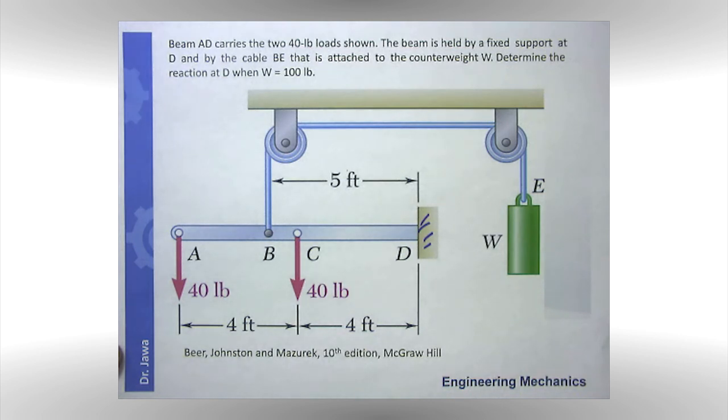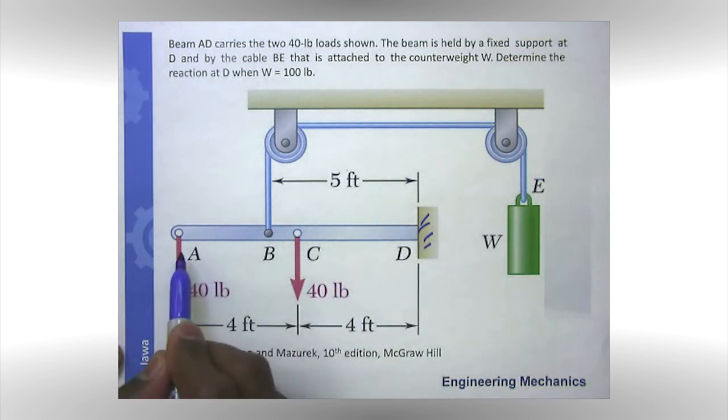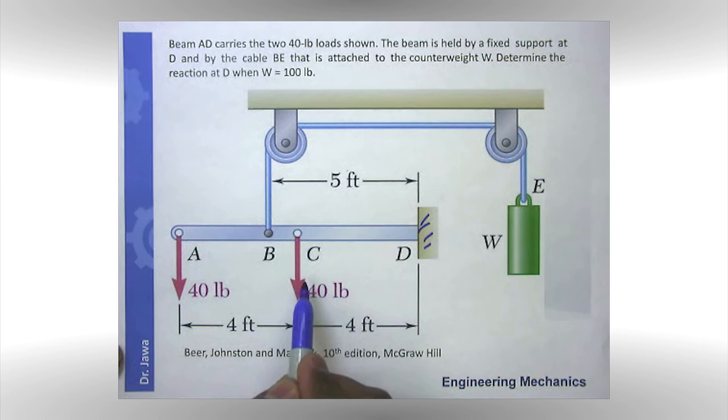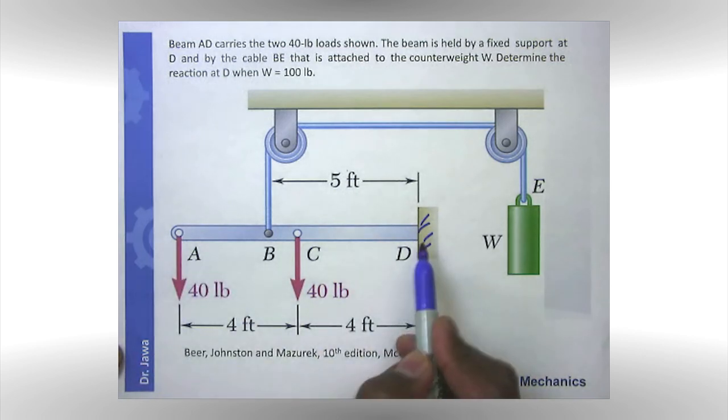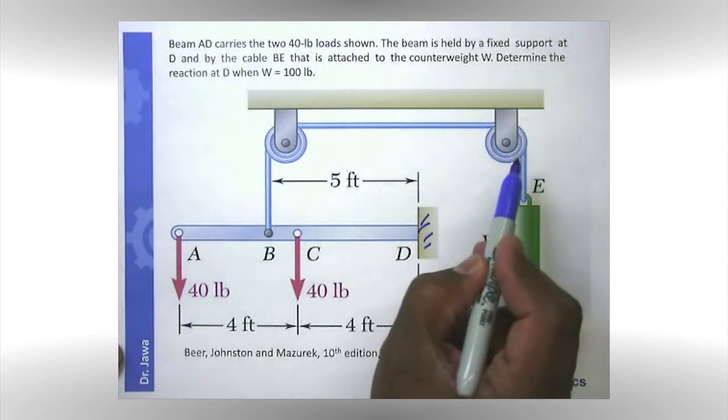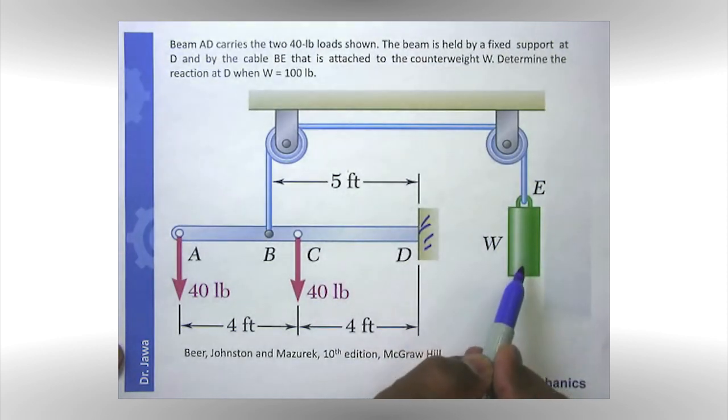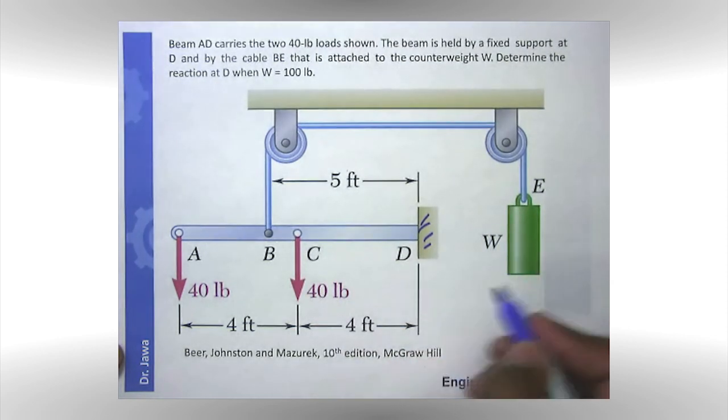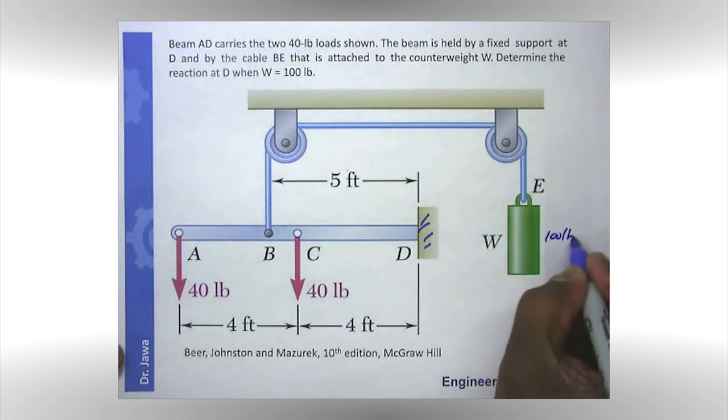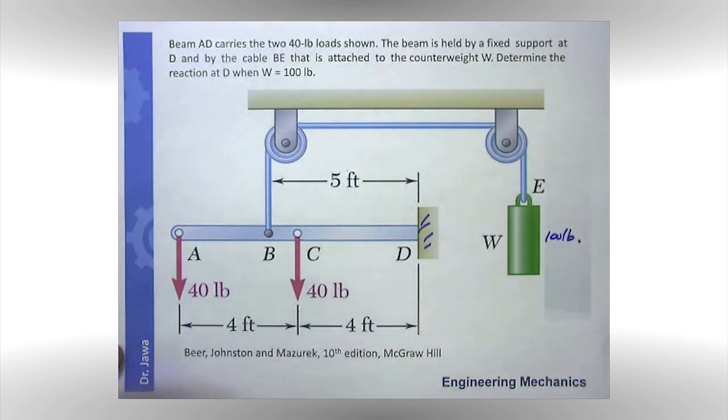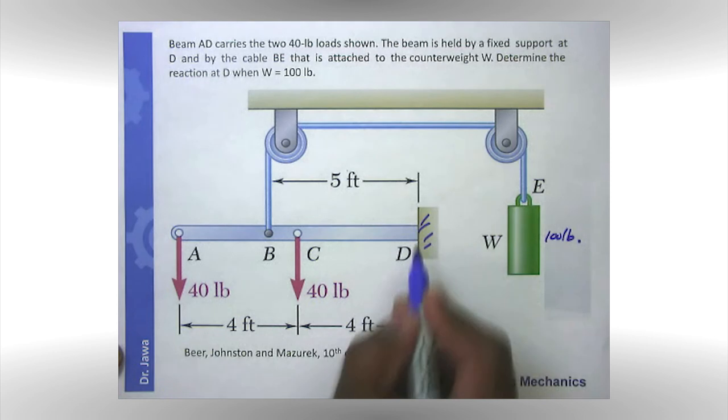Now the question here is this beam or structural member AD carries two 40 pound loads and the beam is held by a fixed support at D. And also it is supported by a cable which is attached to a counterweight. In this case, the counterweight is 100 pounds. Question is calculate the support reaction.